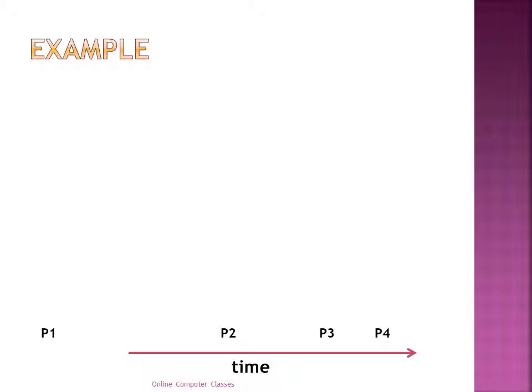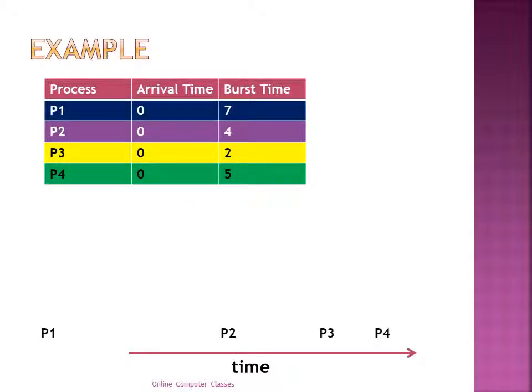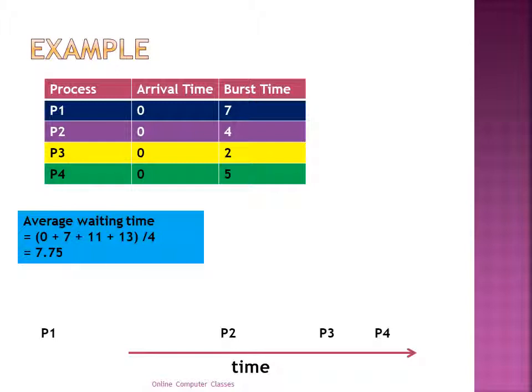Now let's look at an example of how FCFS works. There are 4 processes: P1, P2, P3, and P4. The arrival time of all processes is 0, but they have different burst times. The waiting time for P1 is 0 because it starts as soon as it arrives. P2 must wait until P1 completes, so P2's waiting time is 7. P3 waits until P1 and P2 complete, giving it a waiting time of 11. P4 has a waiting time of 13 seconds. The average waiting time is 7.75 seconds.